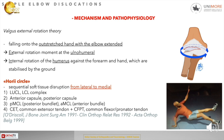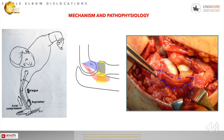The O'Driscoll circle describes a sequential soft tissue disruption from lateral to medial. It starts with the lesion of the lateral ulnar collateral ligament, continues with the anterior and posterior capsule injury, then the posterior bundle of the medial collateral ligament, the anterior bundle of the medial collateral ligament, and finally can progress to the common extensor tendon and the common flexor-pronator tendon.